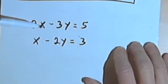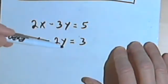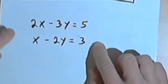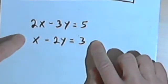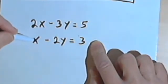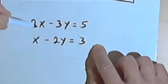So if you have a problem like this, 2x-3y equals 5, and x-2y equals 3, you could use elimination. You could multiply the second equation by negative 2, and then you'd have negative 2x over here. And when you add the two equations together, the 2x and the negative 2x will cancel.